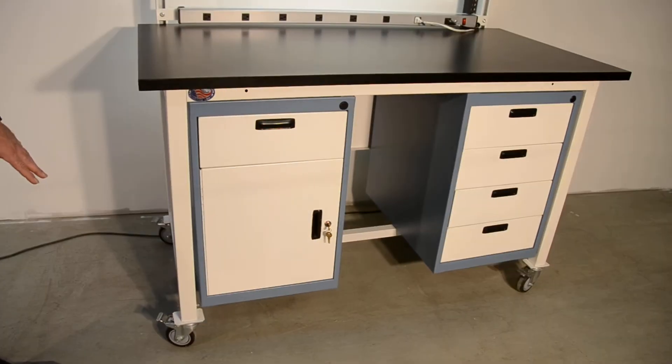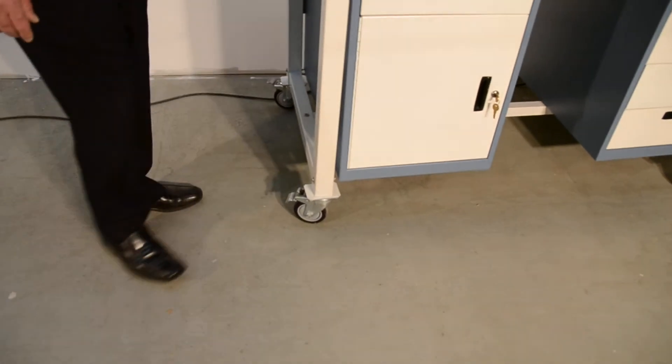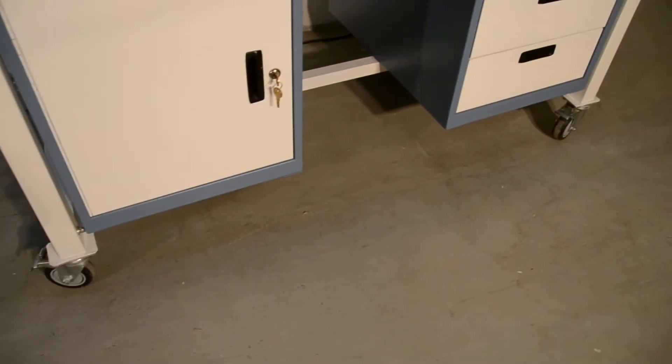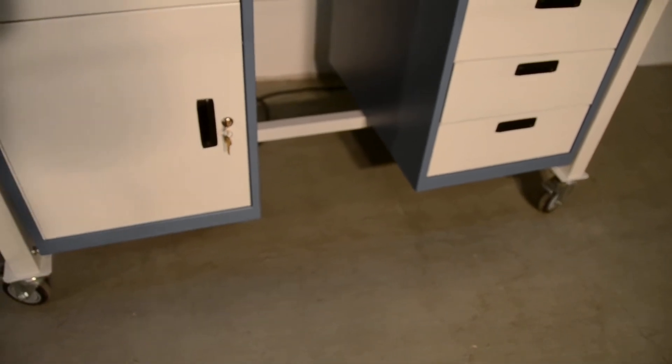We also have our total lock casters, which are nice because they lock not only the roll of the caster, but they also lock the swivel of the caster. We have a footrest which ties the legs together, which is important, something that you want to do when you have a unit on casters in case you're moving over uneven floors with cracks in them or bumps in them.